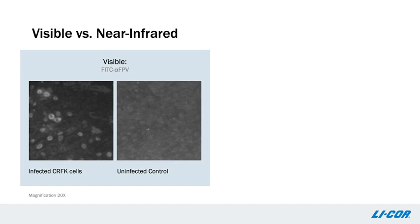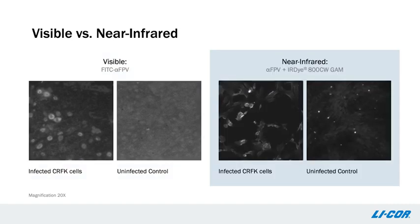In the panel on the left, the virus is detected with the visible fluorophore FITC-labeled primary antibody, while the panel on the right is the uninfected control. In this panel, FPV-infected cells are detected using unlabeled mouse anti-FPV antibody and a near-infrared-labeled IR-Dye 800CW goat anti-mouse secondary antibody. The panel on the right is the control. The background fluorescence is dramatically lower in the near-infrared detection, and the signal-to-noise ratio is superior, resulting in a sharper, clearer image.